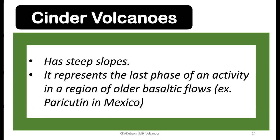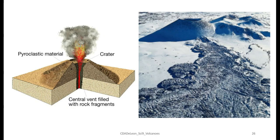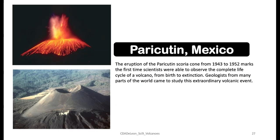Another type of volcano based on shape is the cinder volcano. They have steep slopes and represent the last phase of activity in a region of older basaltic flows. An example is Paricutin in Mexico, which erupted last in 1952.